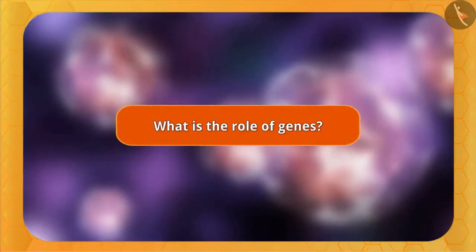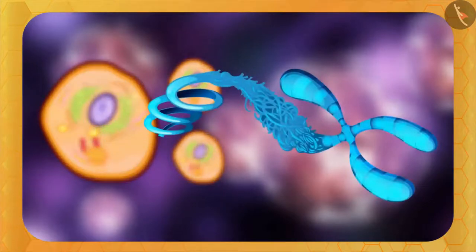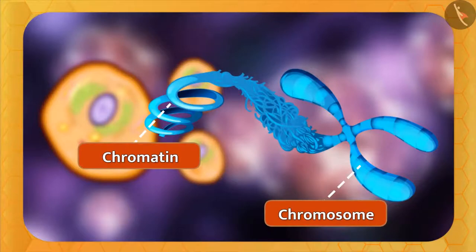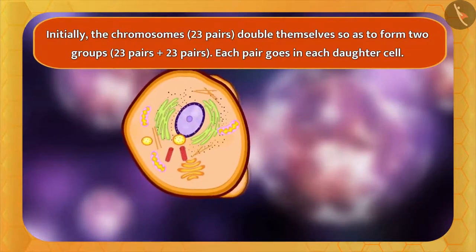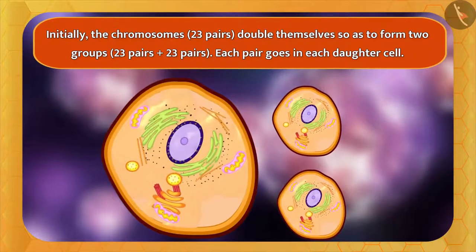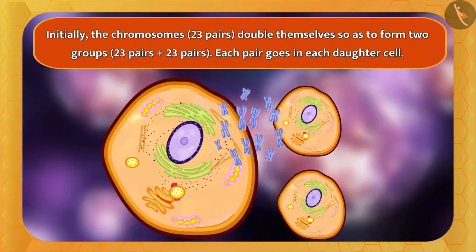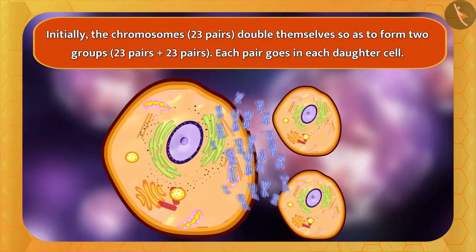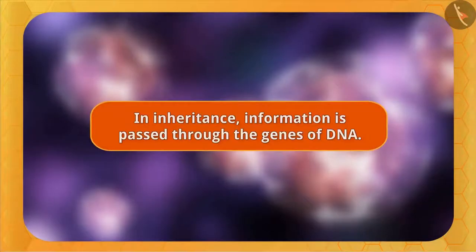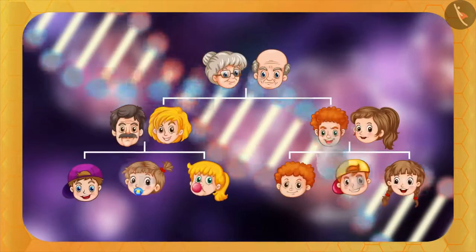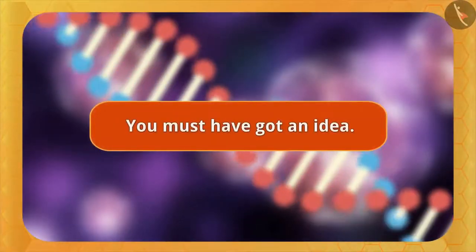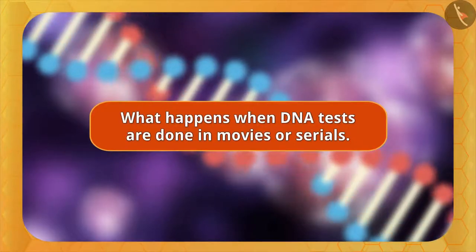When a cell divides, the chromatin gets organized into structures called chromosomes. As the cell divides, some chromosomes migrate to the new cell, and through the genes of DNA, instructions pass into the new cell. In inheritance, information is passed through the genes of DNA — similarly, in children, information comes through the genes of DNA from parents. This is also what happens during DNA tests seen in movies or serials, where the parents of a person are identified.